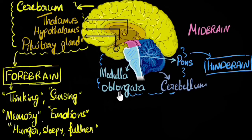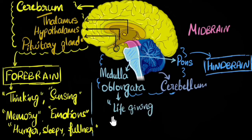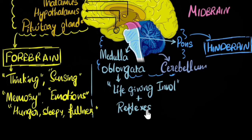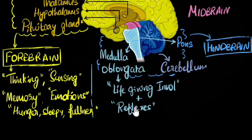What does the medulla oblongata do? Well, it controls most of the life-giving involuntary processes — the most essential for life, like your heart beating, your breathing, digestion. All of those essential things are taken care of by your medulla oblongata. Along with that, it also controls some of your reflexes. You may be wondering — isn't that controlled by the spinal cord? Yes, some reflexes are controlled by the spinal cord, but some reflexes like sneezing and coughing are controlled by your medulla oblongata. None of the reflexes are controlled by the forebrain — that's why they're called reflexes.